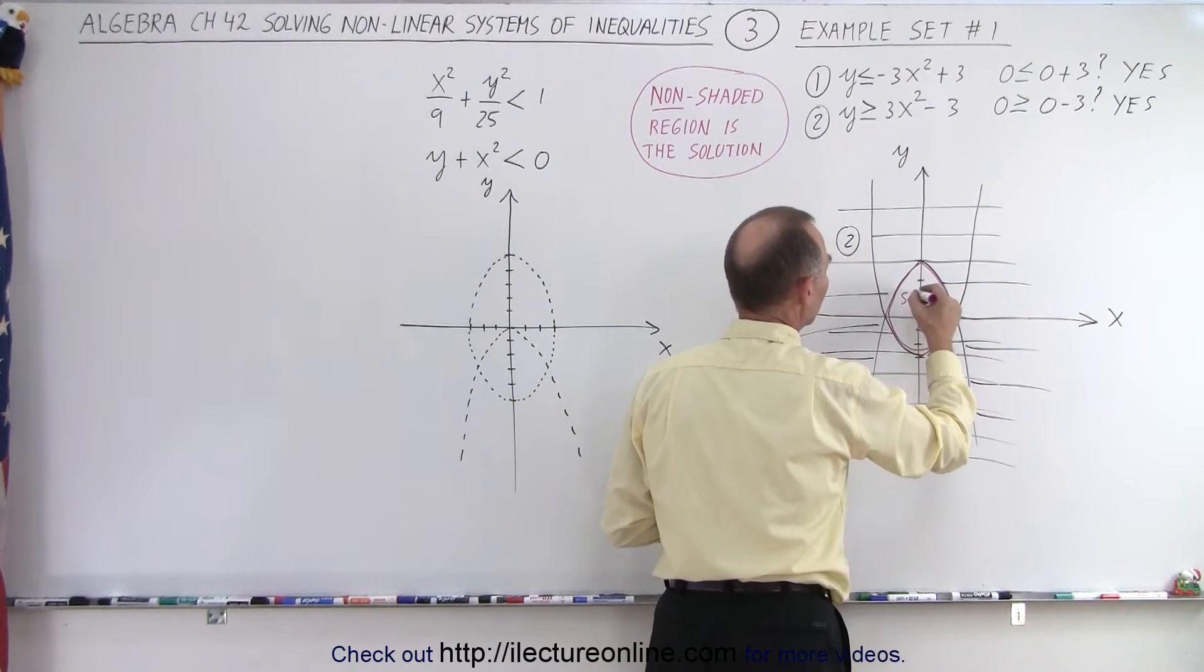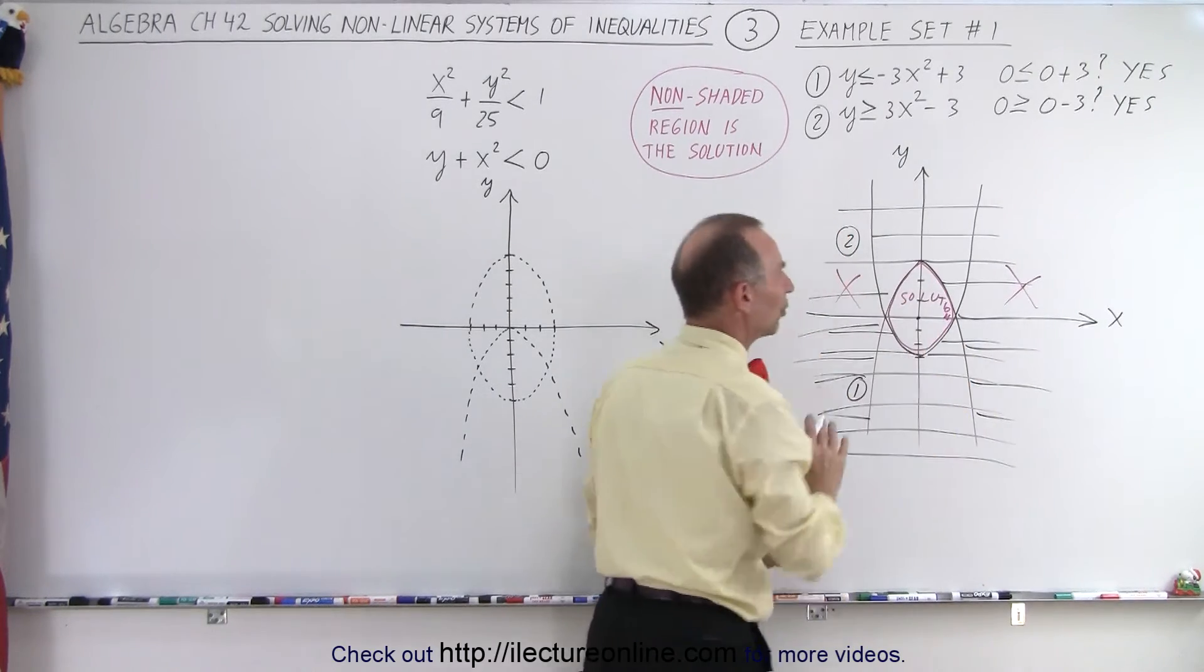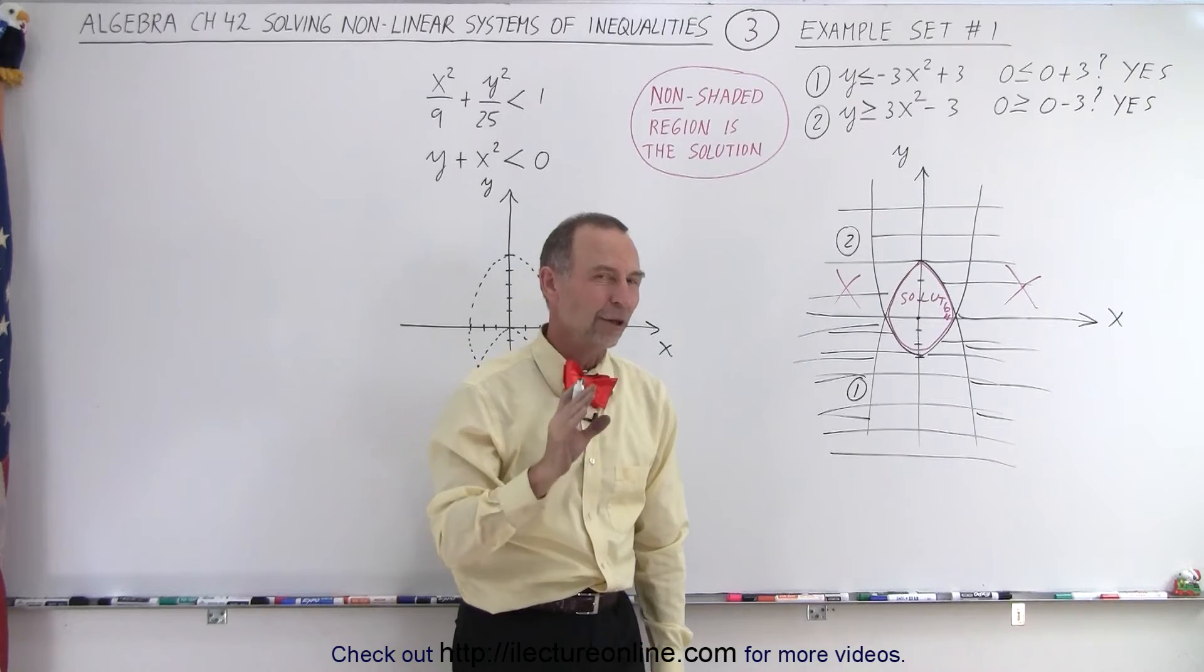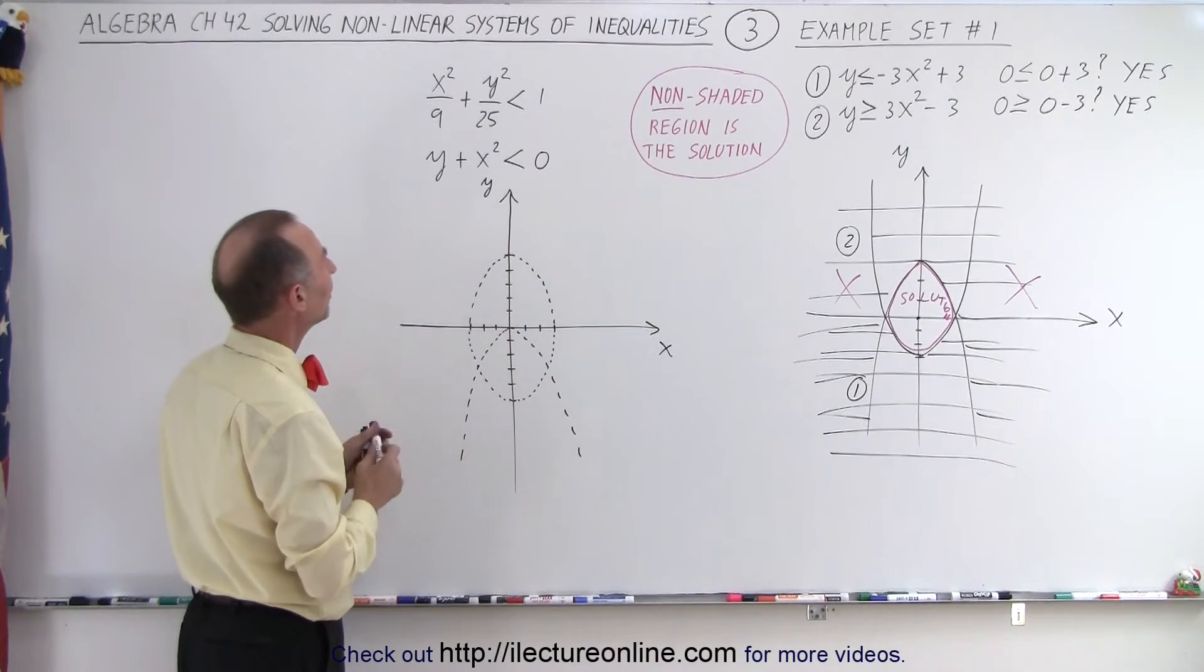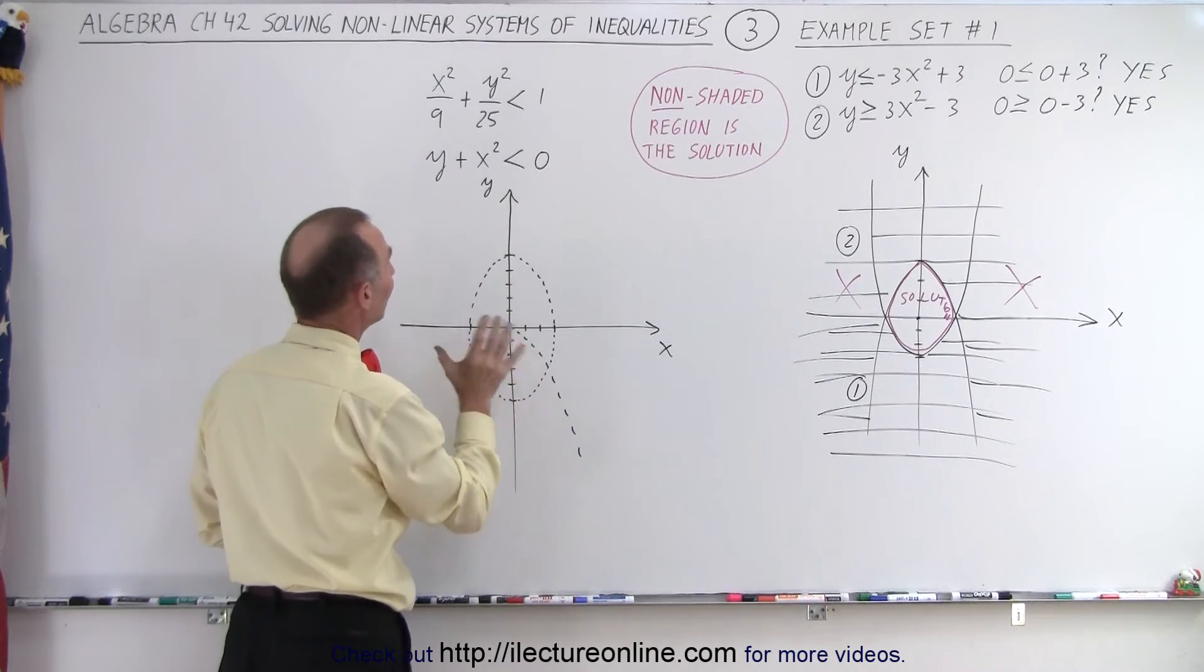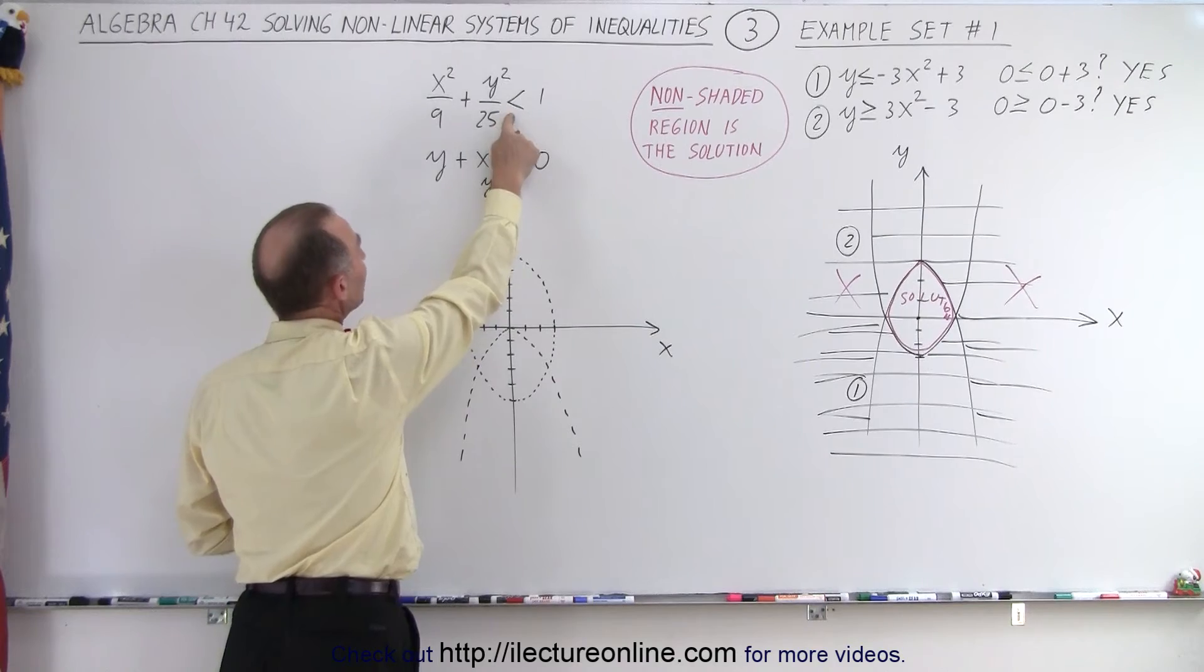So this is the solution; this is not the solution—scratch that out. So that's how we determine the region that satisfies both inequalities at the same time. We'll do the same over here. First of all, we have the ellipse, and with the ellipse it's easier to figure out if it's inside or outside.